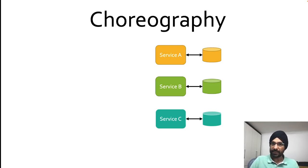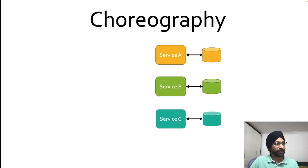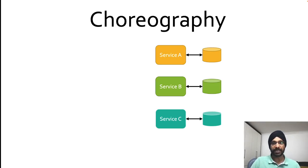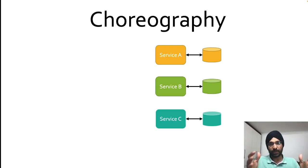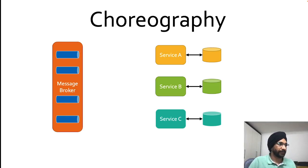Let's take a look at an example of how the choreography design pattern is actually implemented. As you can see, we have three services here: Service A, Service B, and Service C. If these services want to talk to each other, they simply publish their domain events to a central place — what we call a message bus or message broker, as you can see here.